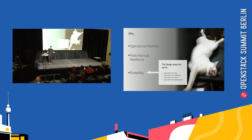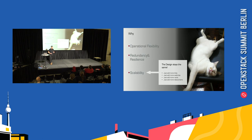And scalability: the leaf and spine architecture design stays the same — I can just add more links, more switches, more racks, or more data centers as needed. The design of the whole fabric stays the same. That's a really important point.